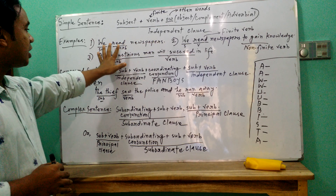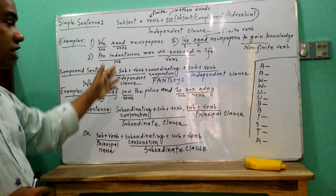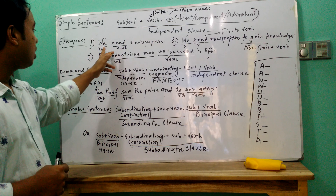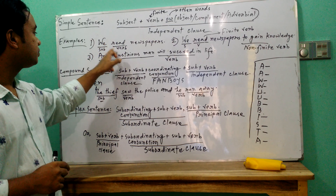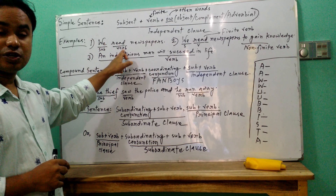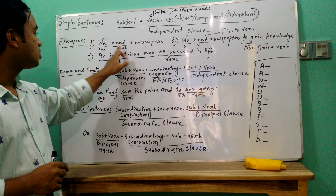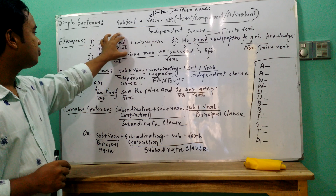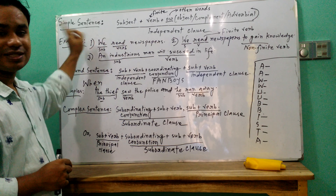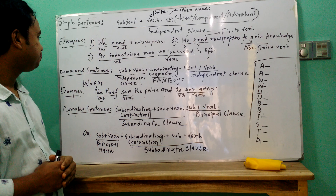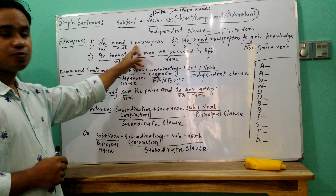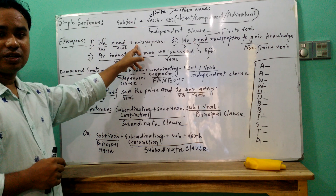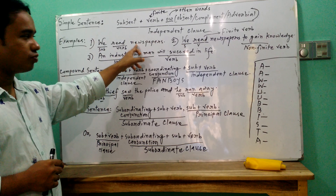Let's look at the sentences written on the whiteboard. First example: 'We read newspapers.' Here, 'we' is the subject and 'read' is finite verb one. So this subject-verb combination is a simple sentence, and 'newspapers' is the object.